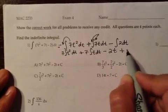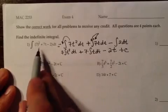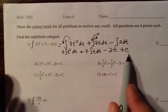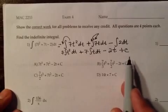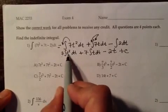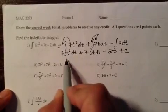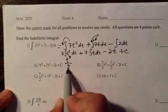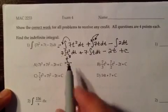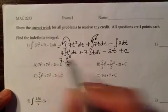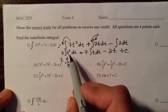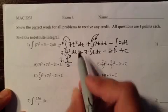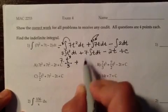When we do an integration problem and we don't have a lower and upper limit, we always put plus c because it's an indefinite integral. So whenever you integrate a variable to a power, you just take the variable, add one to the power, and put that over the power plus one. The seven multiplier is just in front.